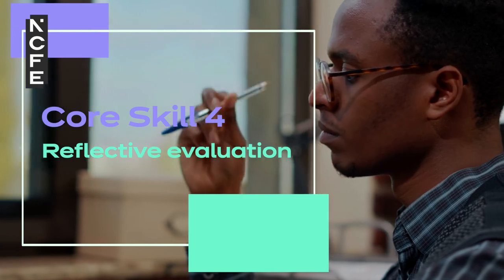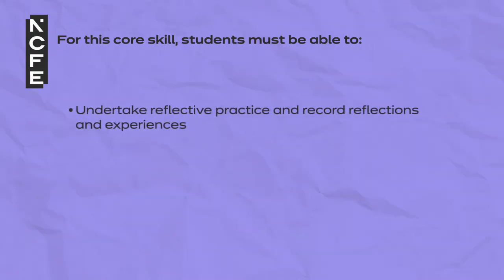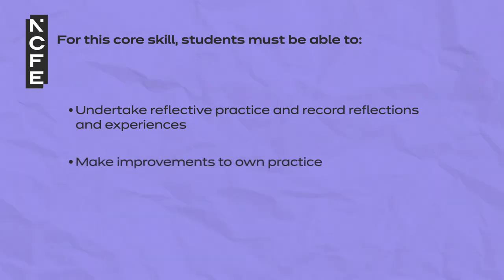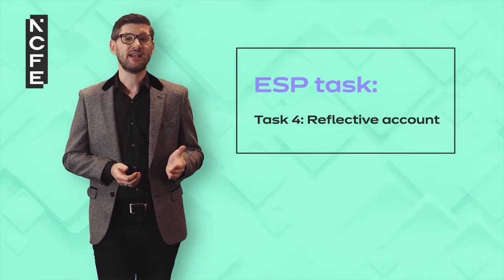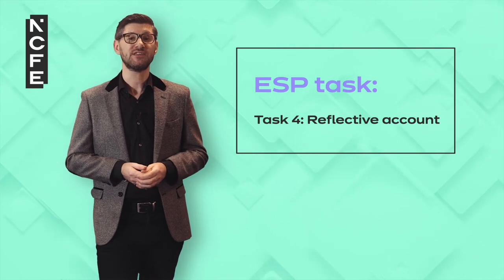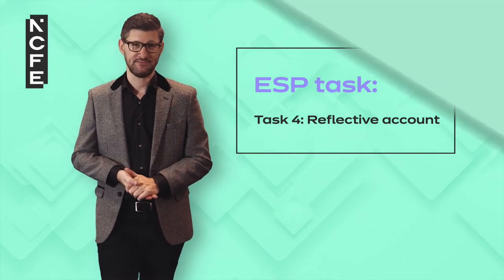Core skill 4 – Reflective evaluation. For this core skill, students must be able to undertake reflective practice and record reflections and experiences, and make improvements to their own practice. An example of an employer set project task where this core skill is assessed is reflective account, in which students are required to complete a reflective account of their performance in the employer set project.